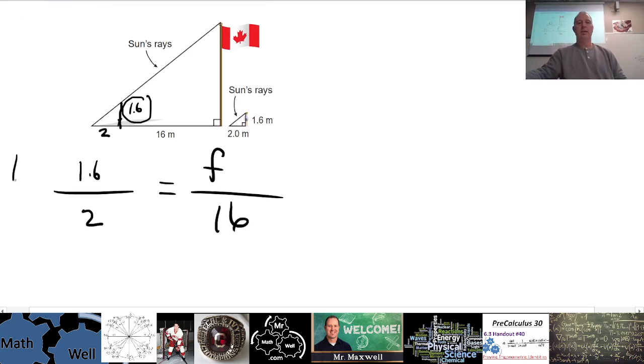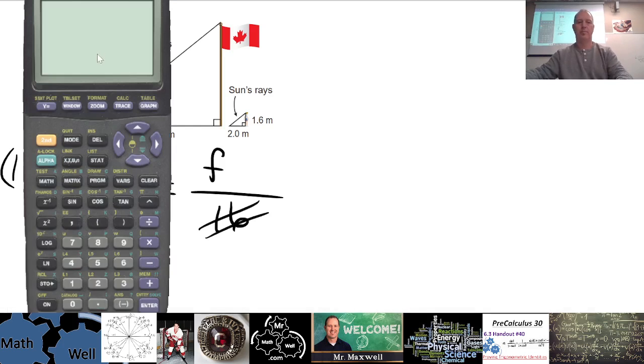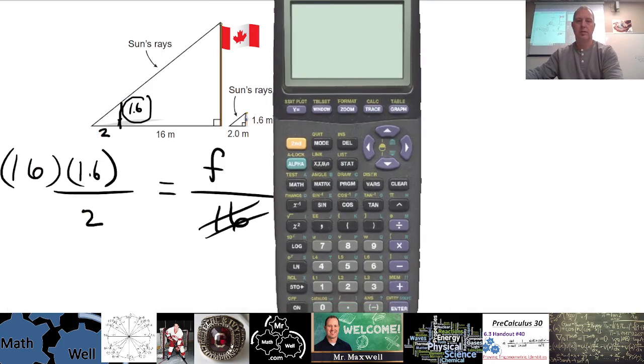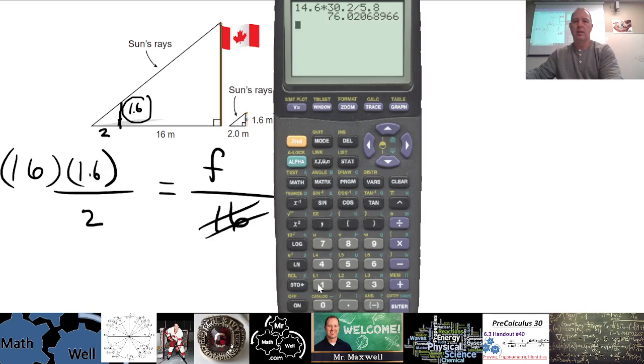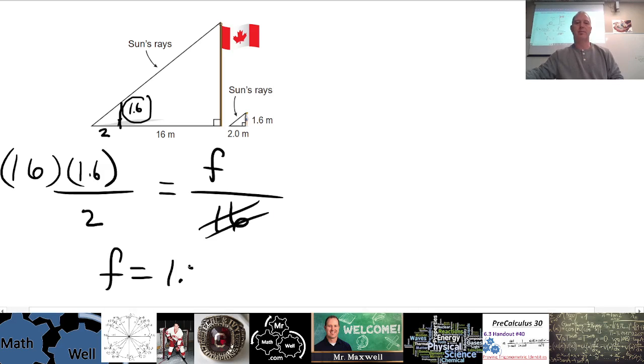So 1.6 times 16 is what we want up here to get rid of the 16 down there, divided by 2. So let's see if this works. 1.6 times 16, divided by 2. 12.8 is what I get. 12.8 meters. Okay, did anybody else get that, 12.8 meters?